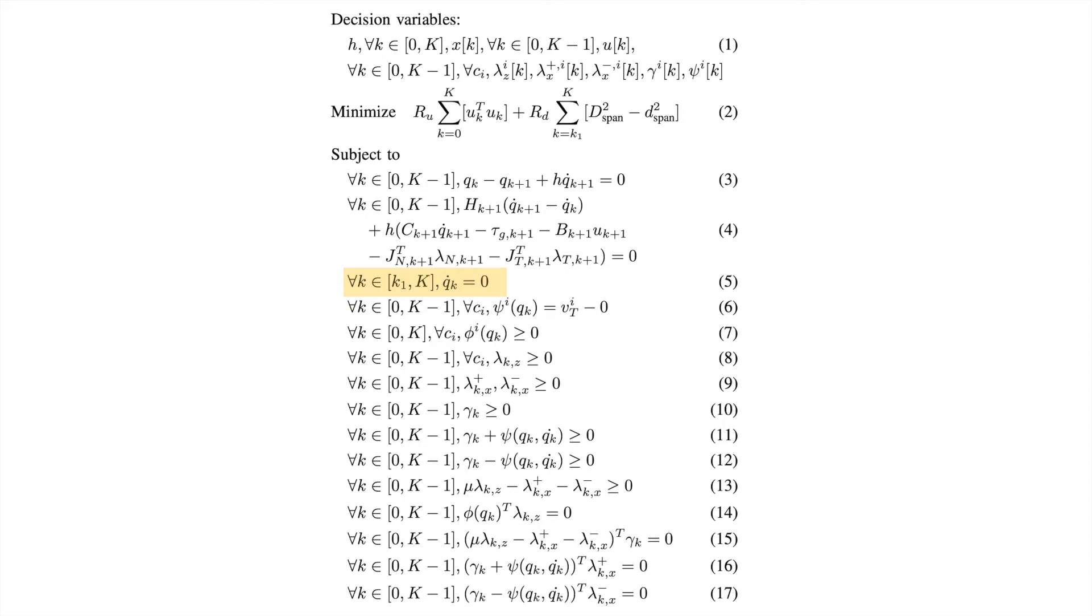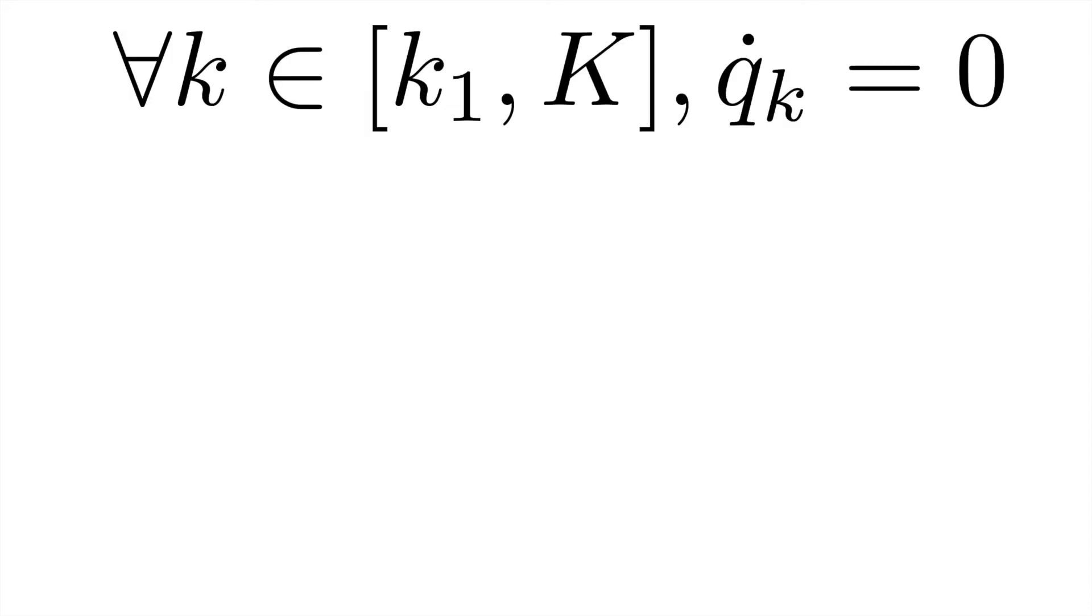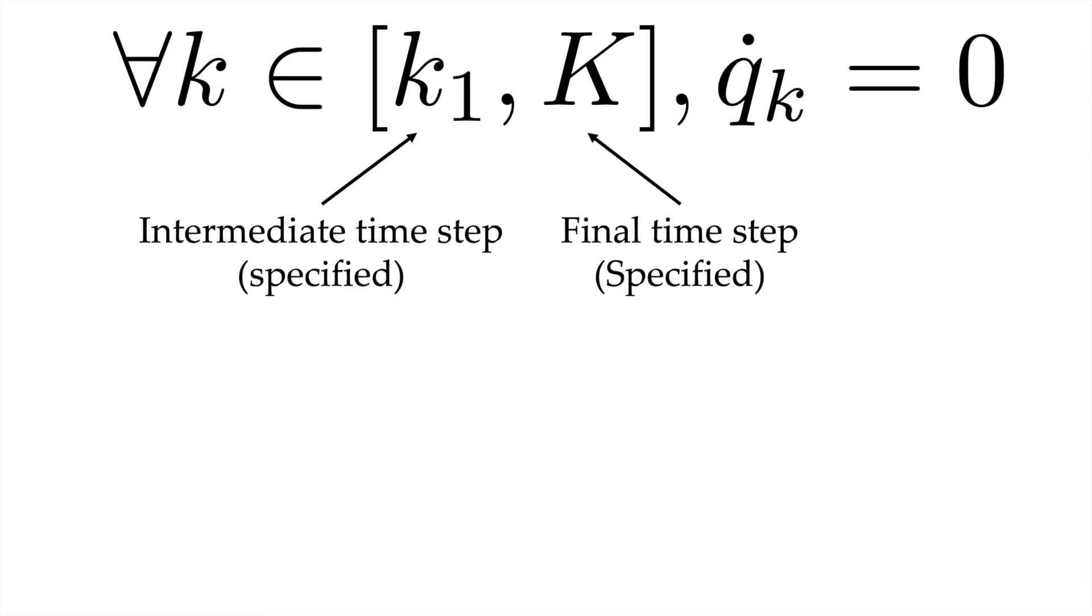Another thing I want to highlight here is constraint 5. What does this constraint mean? We have two specified time steps. One is k1, intermediate time step. One is uppercase K, final time step. From k1 to K is actually a specified time range in the second half of the trajectory.